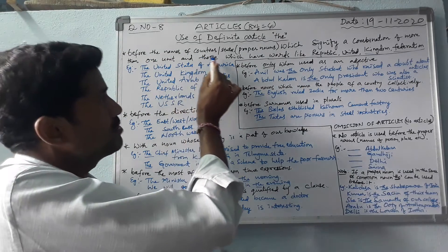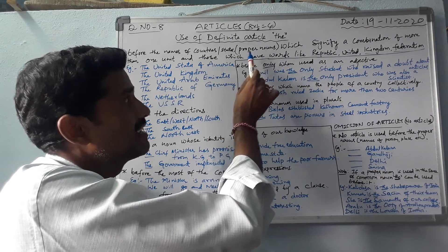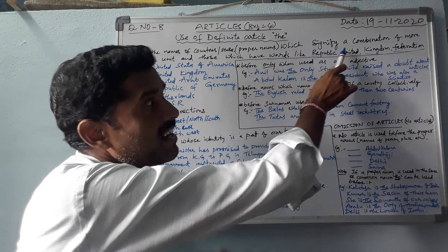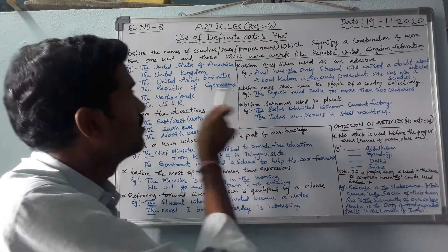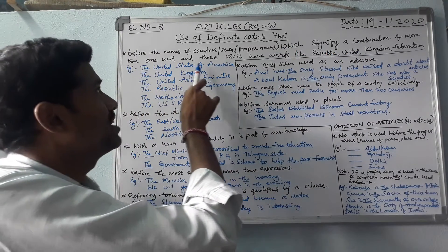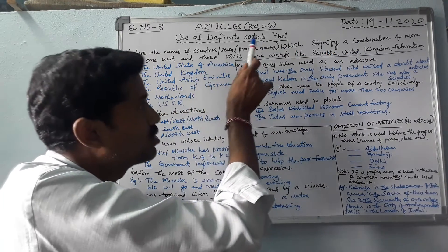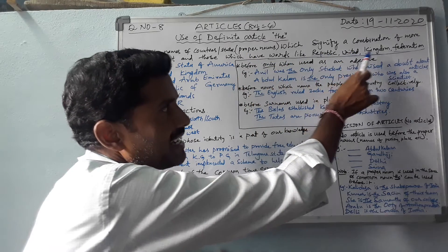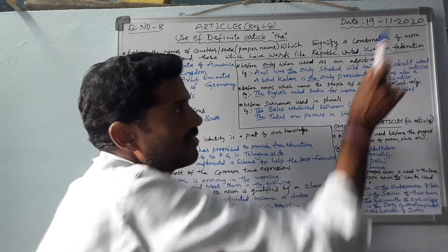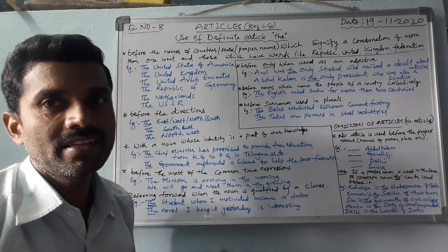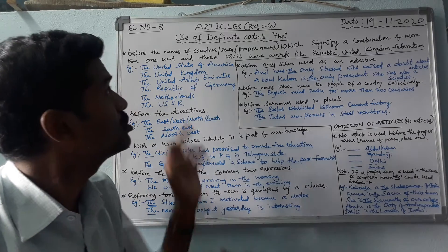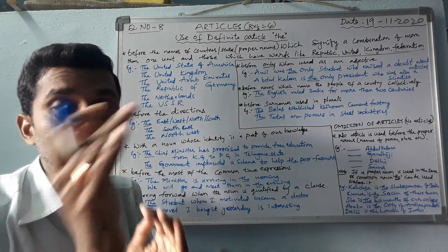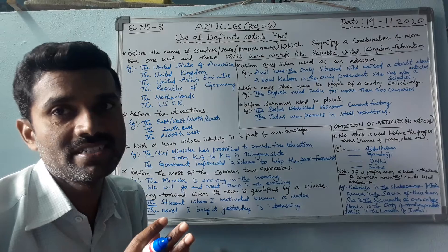Before the names of countries or states — proper nouns — which signify a combination of more than one unit, and those which have words like Republic, United, Kingdom, Federation. The definite article 'the' is used before such countries or states, those that are a combination of more than one unit.